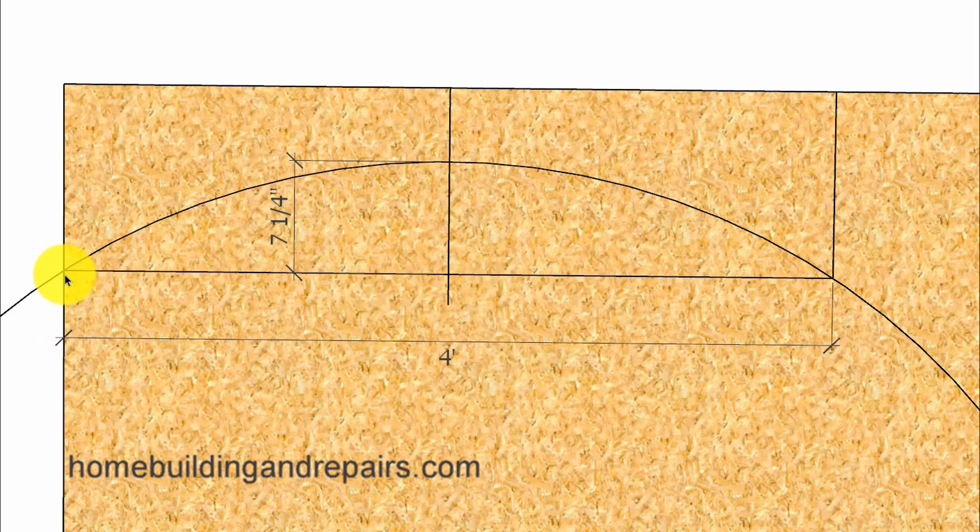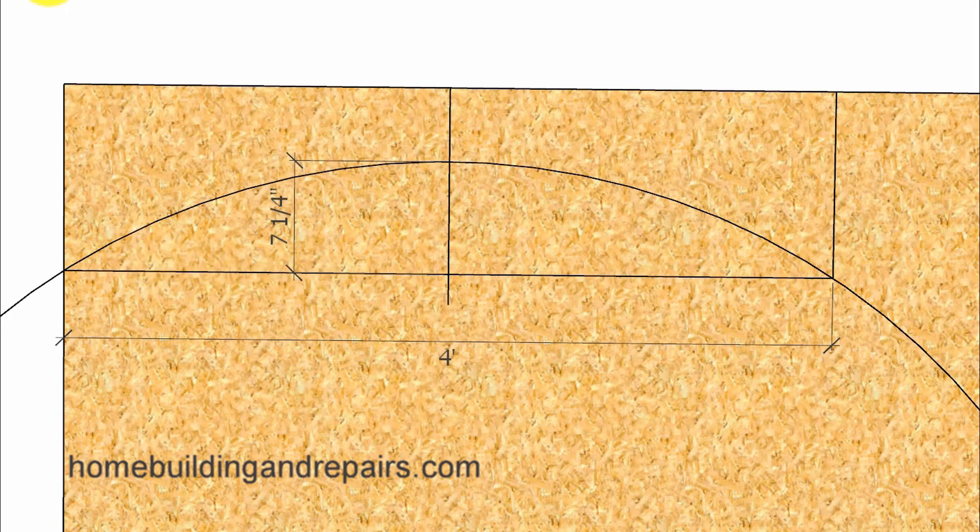Let's get started. We have a four foot wide arch that needs to be seven and a quarter inches up from the horizontal line. To do that, all we need to do is cut a board with an angle from this point here to this point here that will be seven and a quarter inches wide.